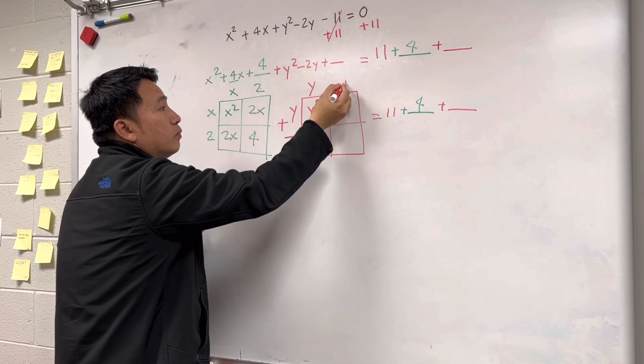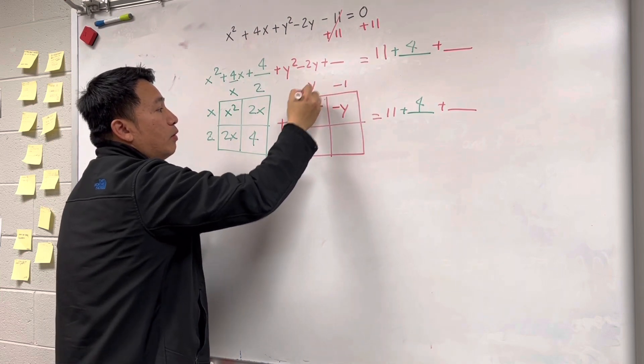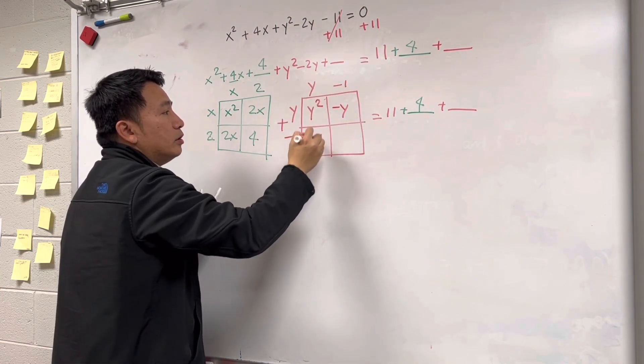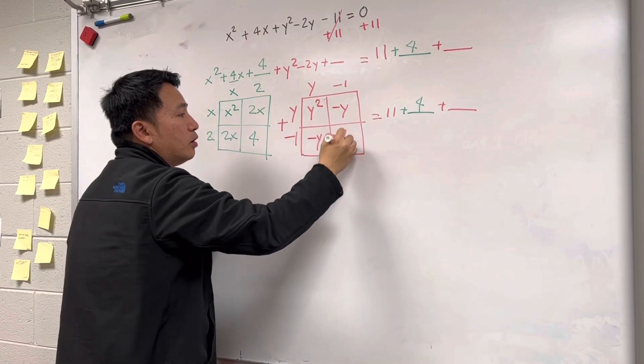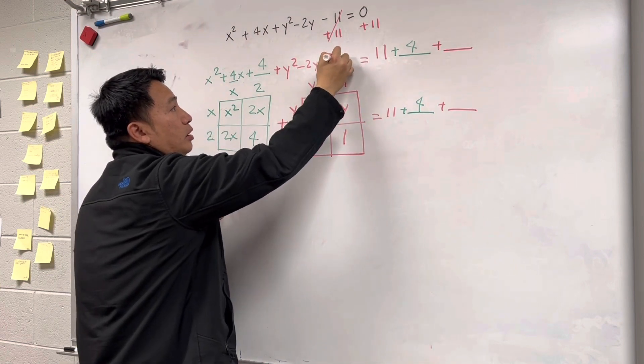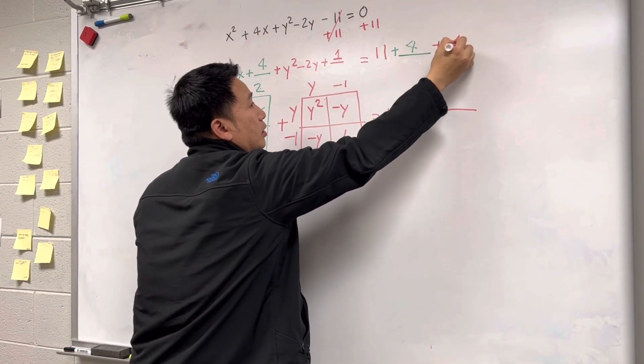So negative 1 times y is negative y. y times negative 1 is negative y. Negative 1 times negative 1 is positive 1. So you're going to add 1 here, you're going to add 1 there, and then bring it down.